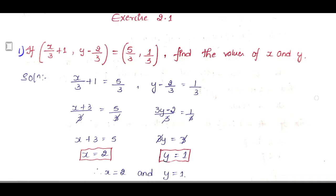Hi friends, I am Balaji Rao. Welcome to BR Max class. In last class, we learned the definition of Cartesian product of sets and we learned examples of how we will calculate A cross B, B cross A, and we learned 5 important note points. This is exercise number 2.1 from the NCERT textbook of class 11.